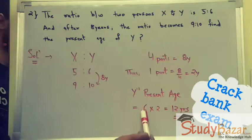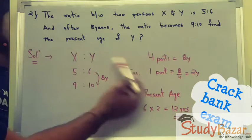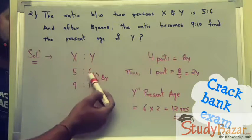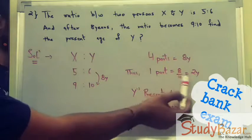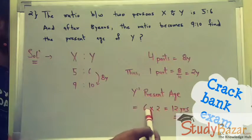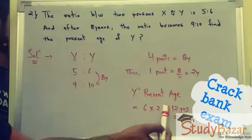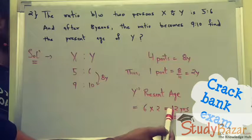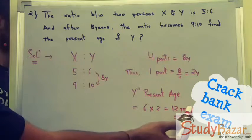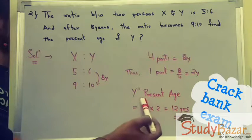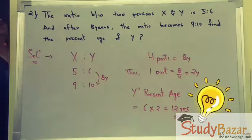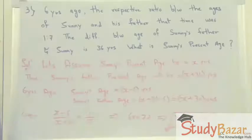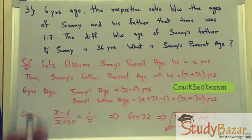Now Y's present age will be its initial ratio part, which is 6, multiplied by the one-part equivalent of 2 years. So 6 into 2 equals 12 years. This will be Y's present age. I hope you understood this concept.